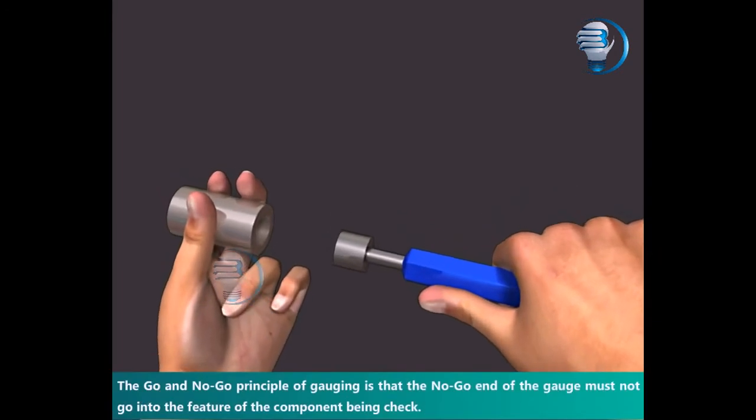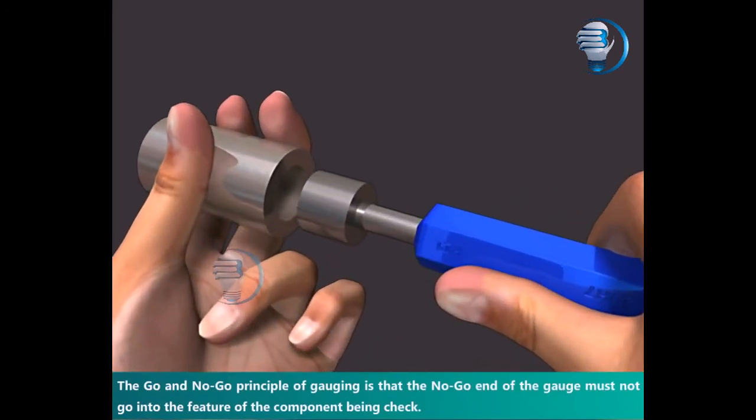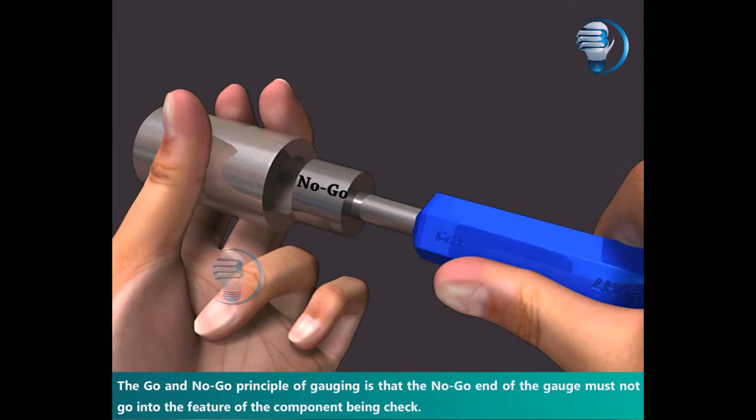The go and no-go principle of gauging is that the no-go end of the gauge must not go into the feature of the component being checked.